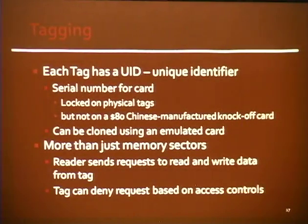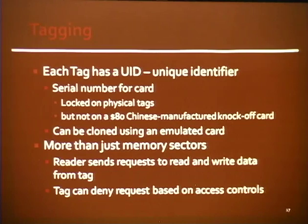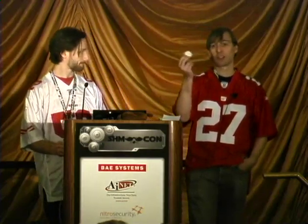Each tag has a unique identifier called the UID — it's like a serial number for the card. It's locked on these physical tags. But Corey picked up an $80 Chinese-manufactured card where you can actually rewrite this UID. So using the UID as a safeguard is decent, but keep in mind it can be emulated. The price for standard tags is usually between $1 and $2, so $80 per tag is a considerable hike. The tags are more than just memory sectors — the reader will send a request to read and write data, requesting specific data sectors, and the tag returns that. Tags can also have access controls, so you can request access to a sector and be denied based on access conditions in the tag.